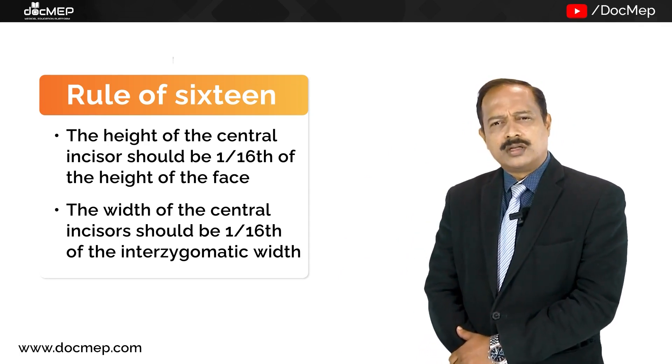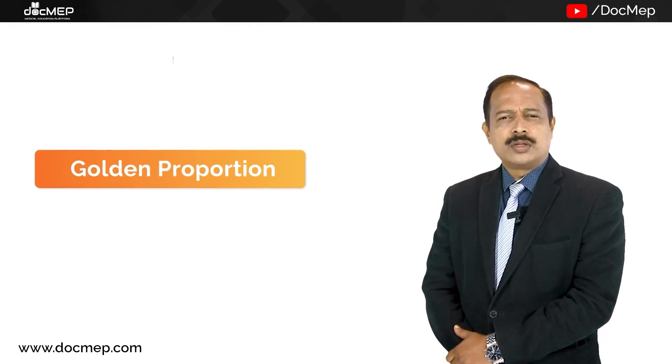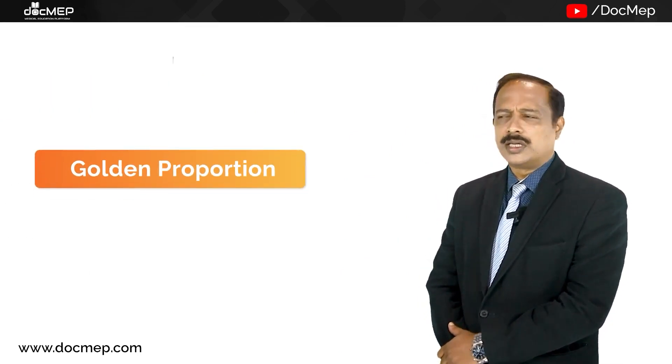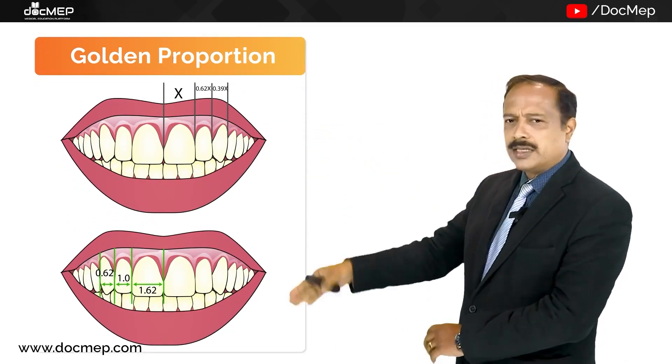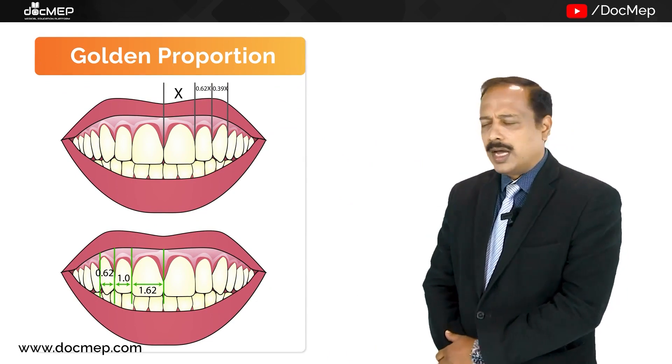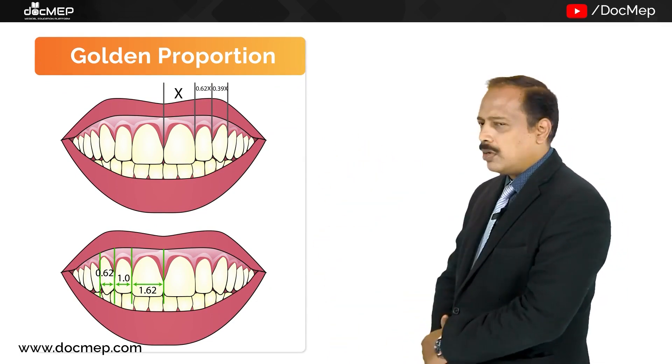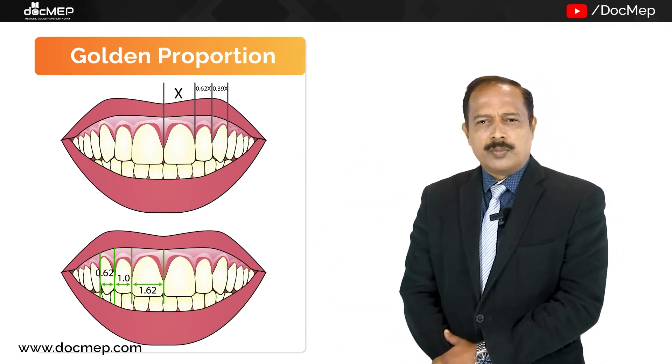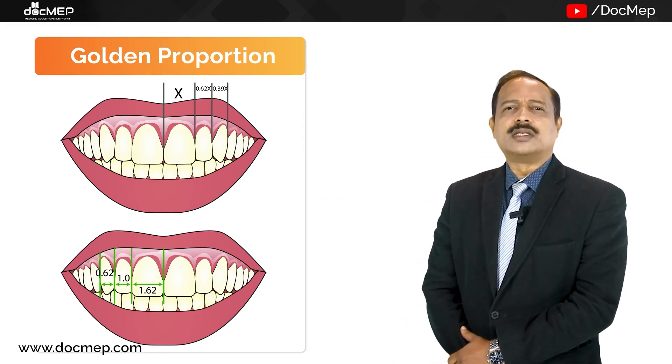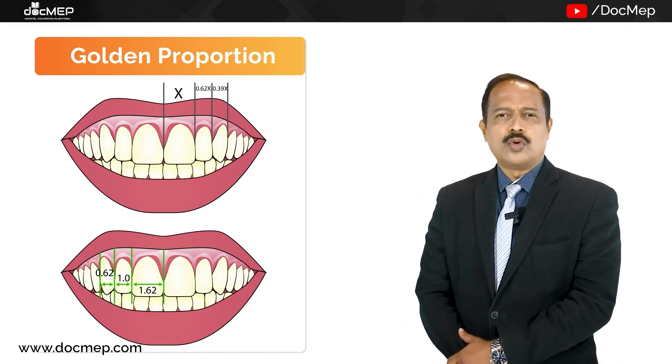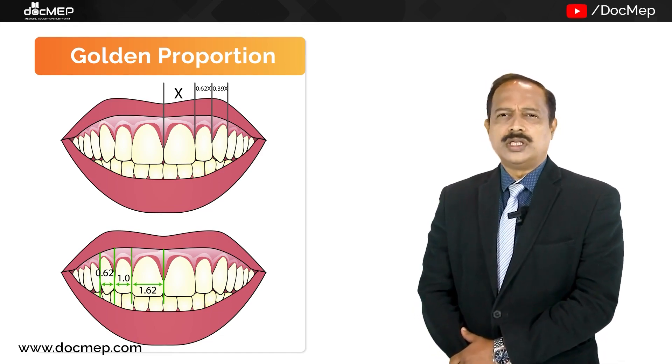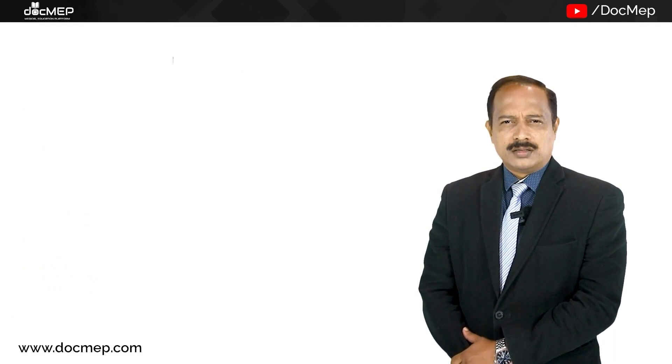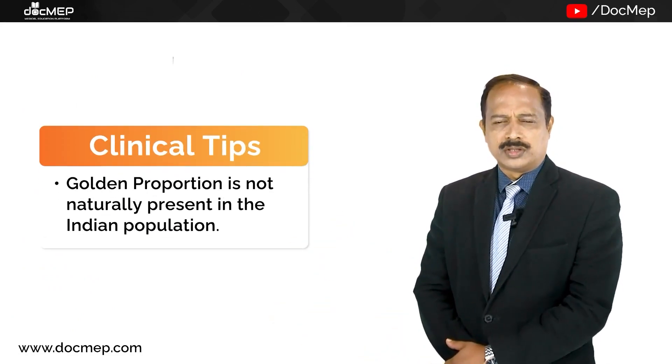We have also studied golden proportion. What exactly is golden proportion? It was taught that the central incisor if they are 1.618 then the lateral incisor should be 1 and the canine should be around 0.618. But in reality this is very difficult. If you go ahead with such type of golden proportion, we do not see the thing naturally present in patients.